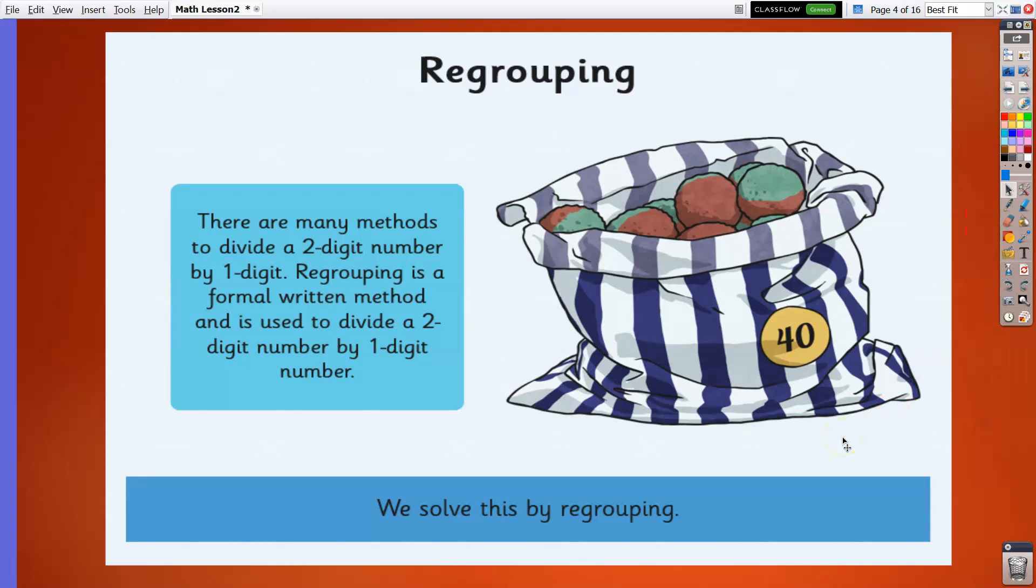Regrouping - this is the new strategy that I'm going to introduce to you. So there are many methods to divide a two-digit number by one digit. Regrouping is the formal written method and is used to divide a two-digit number by a one-digit number.